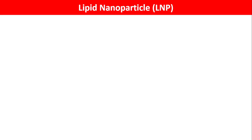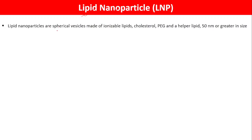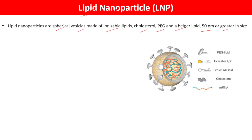What are lipid nanoparticles? If you look at this word 'lipid nanoparticle,' it consists of two words: lipids and nanoparticles. Lipid nanoparticles are spherical vesicles that are made up of ionizable lipids, cholesterol, PEG, and helper lipid, which are 50 nanometers or greater in size. They are made up of PEG lipids, ionizable lipids, structural lipids, and cholesterol. Each of these lipid components have important roles to play, and the mRNA molecule or the RNA molecule is encapsulated within these lipid nanoparticles.